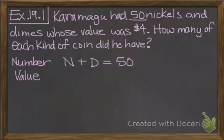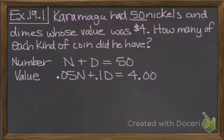For the value equation, the value of the nickels and the value of the dimes and the money value comes into play. Each nickel is worth 5 cents, so .05n plus .1 or .10 dimes equals $4. We just leave off the dollar sign.